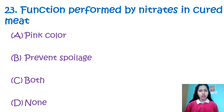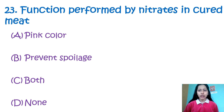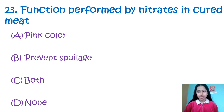Question number 23: Functions performed by nitrates in cured meat — pink color, prevents spoilage, both, or none. When curing of meat happens, first it retains the pink color, and secondly it prevents spoilage. Curing of meat by nitrates or nitrites can produce a pinkish red color by interaction with the myoglobin present in the muscles. So my correct option is option number C — both.